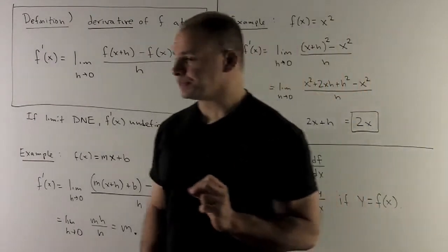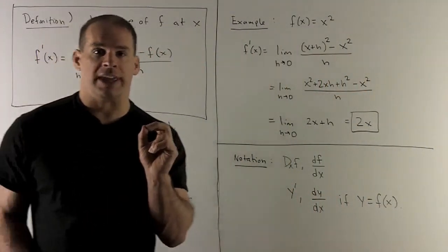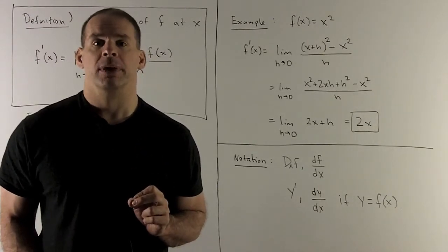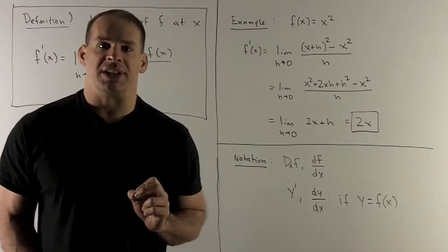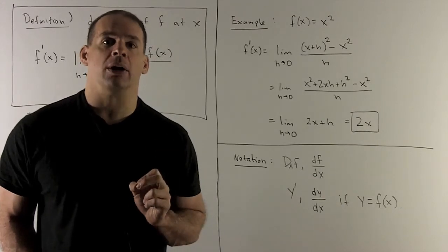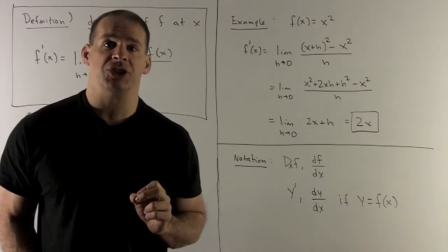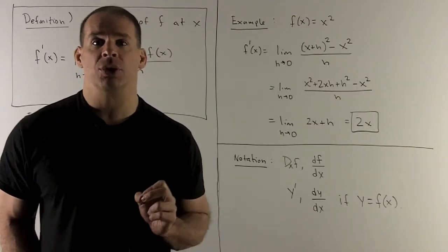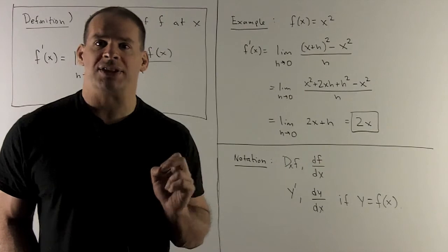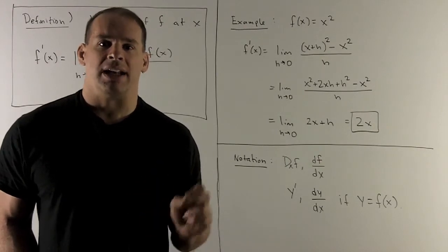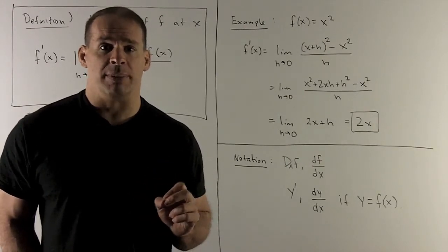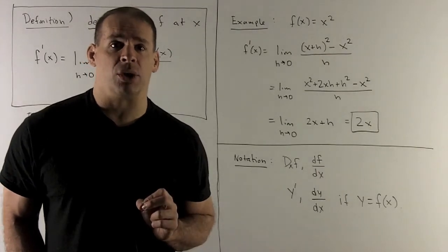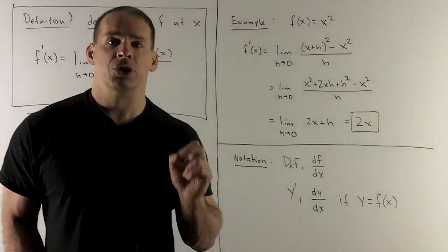Let's try another example: f(x) = x². So f(x+h) = (x+h)² = x² + 2xh + h². And f(x) is just x², so when I take the difference, what's left over is 2xh + h². I divide by h, giving me 2x + h. Then when I take the limit as h goes to zero, I'm just left with 2x.